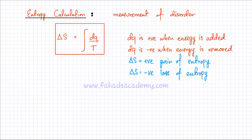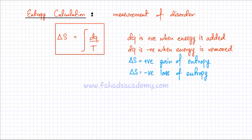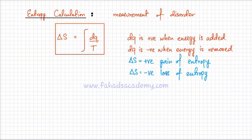Based on this formula, the unit for entropy change is derived from dQ in joules divided by temperature in Kelvin. Note that unlike enthalpy, where units are kilojoules, for entropy change the units are generally taken as joules. So the unit for entropy change is joules per Kelvin.